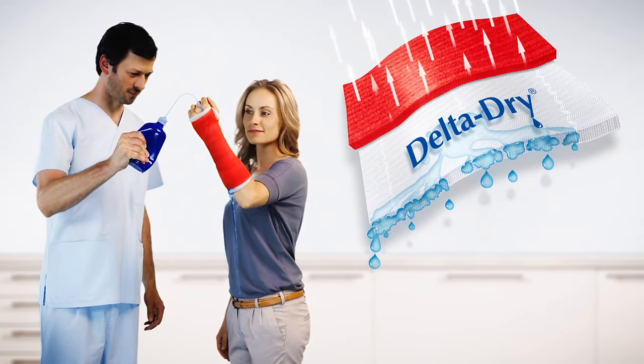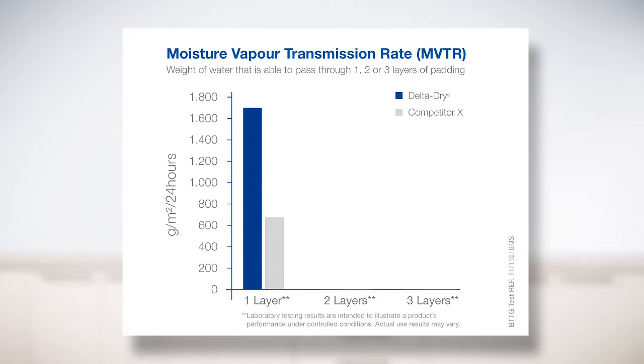Residual moisture evaporates. In this way, cast and skin dry quickly. Laboratory tests prove that with the same amount of layers, Delta Dry allows twice as much moisture vapour to evaporate through the airy mesh as conventional products.